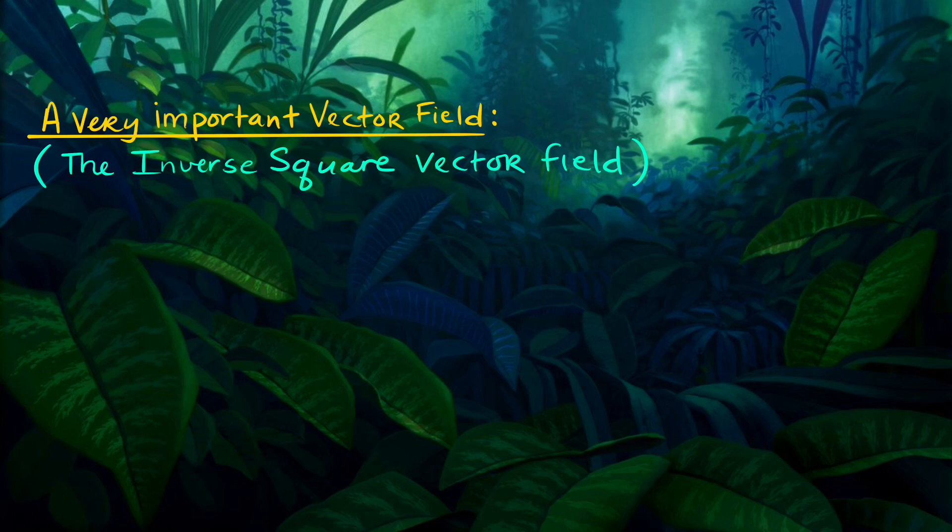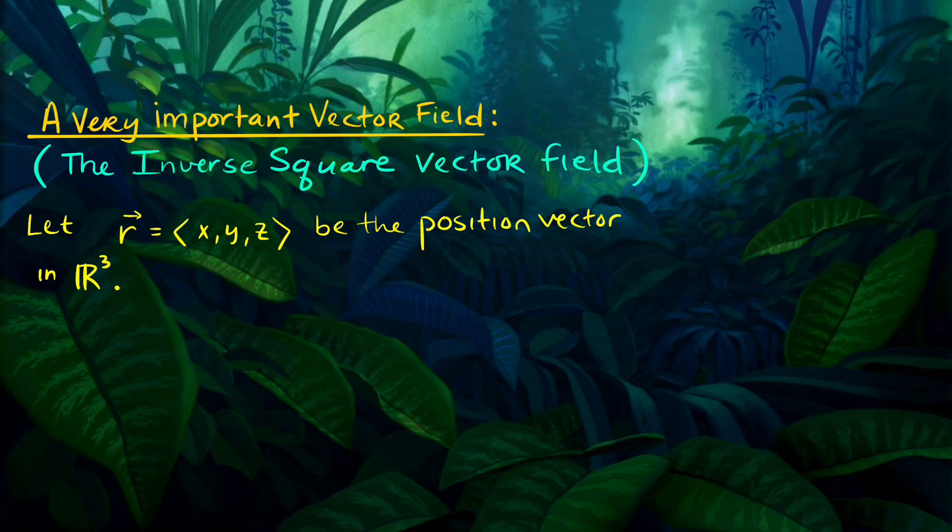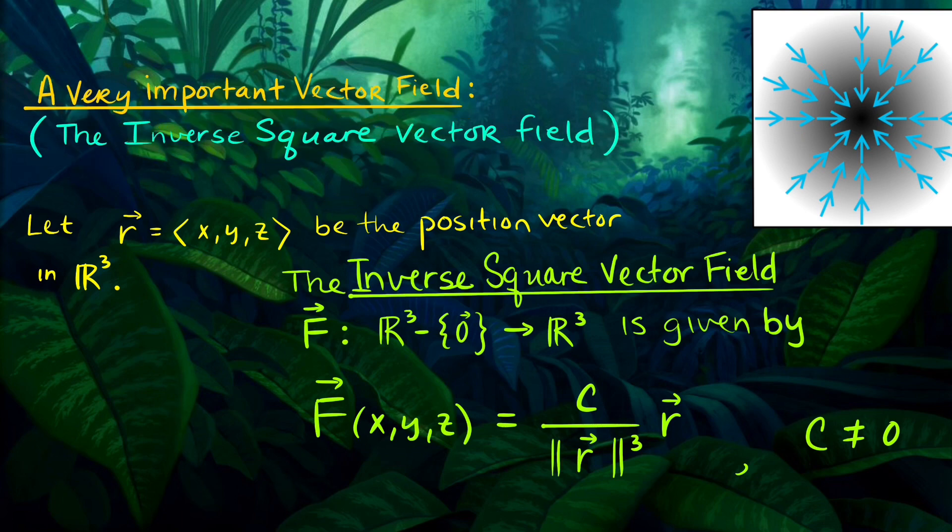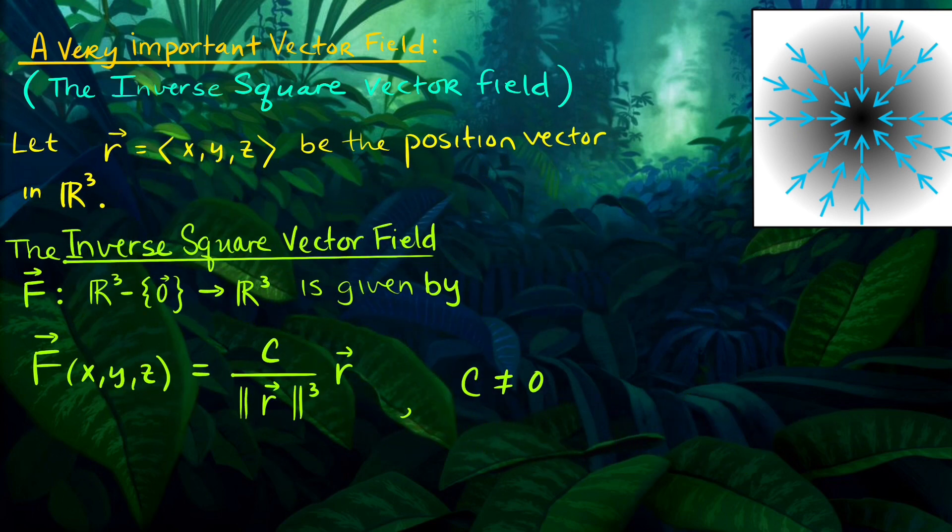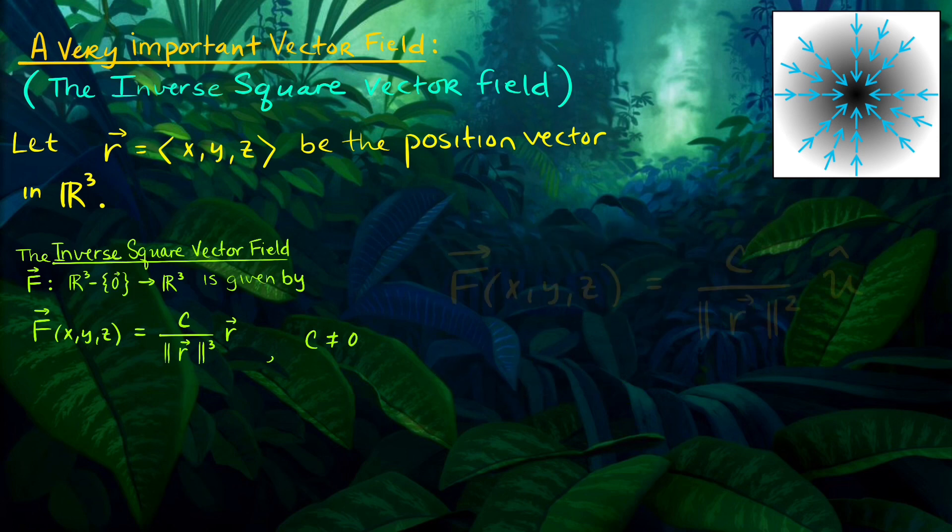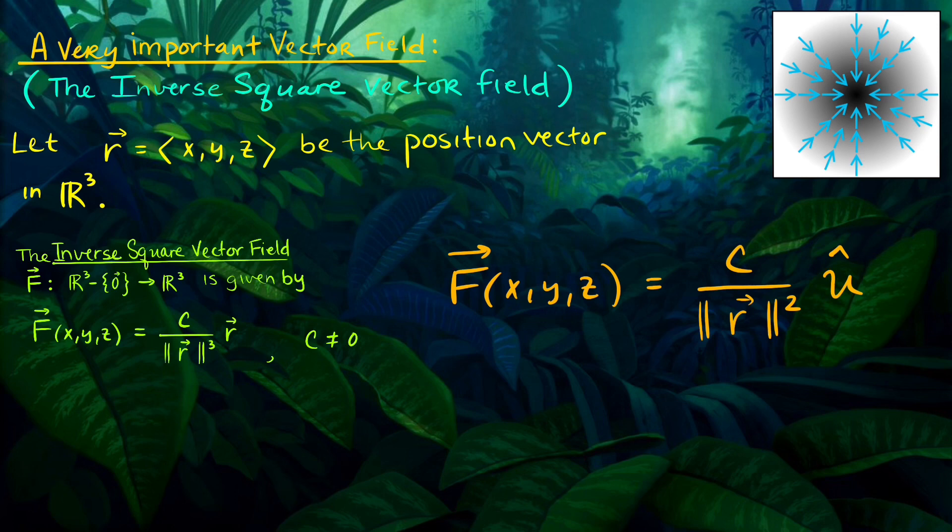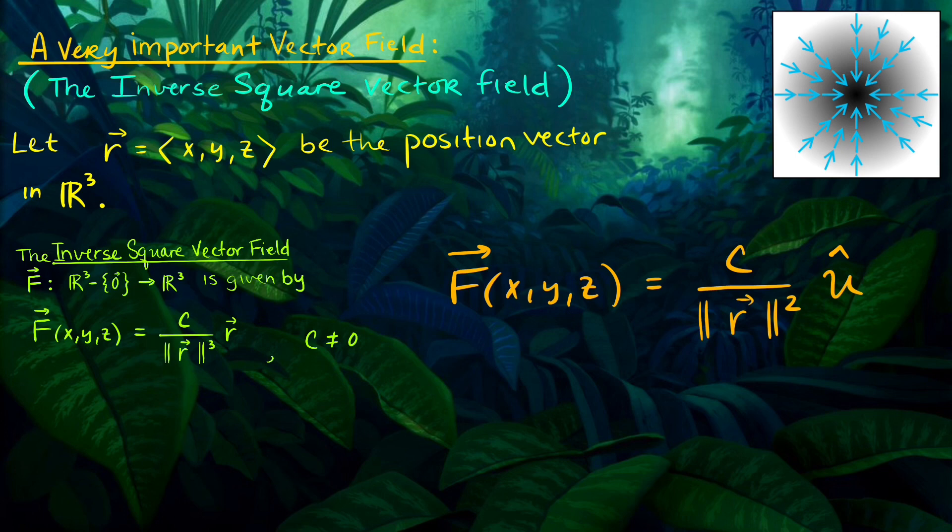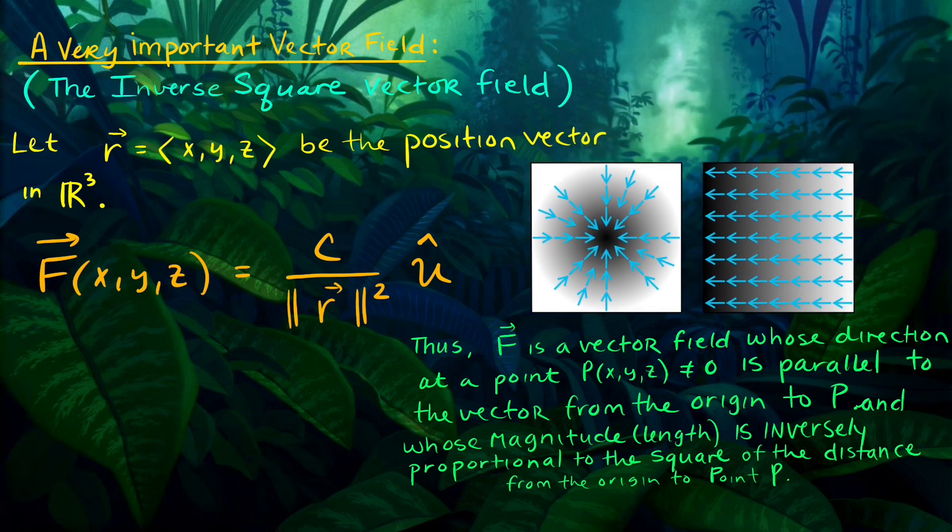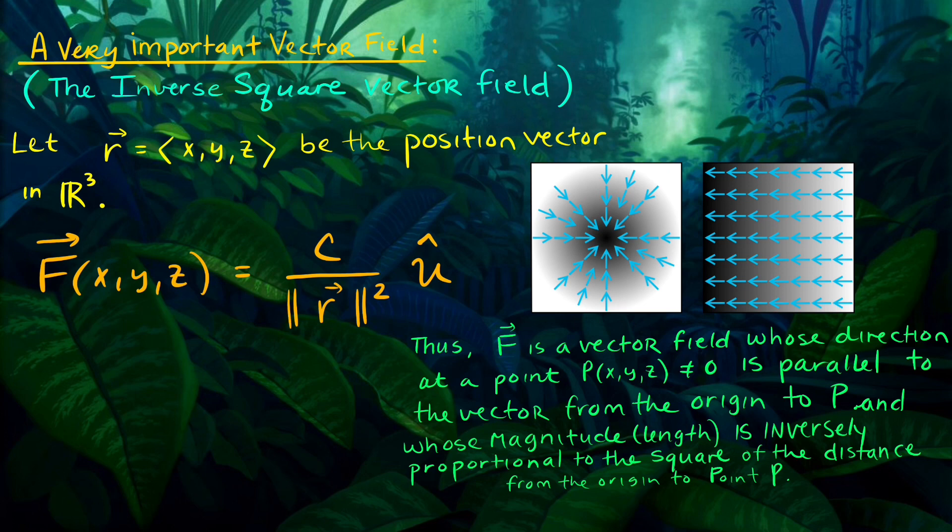A very important vector field to study is the one of an attractive or repulsive force field, an inverse square vector field. Given by a position vector r in R^3, we can define this force field as a constant divided by the magnitude of that position vector cubed in the direction of that radial vector, or the unit radial vector u-hat. Since F is parallel to the radial vector r, its strength is inversely proportional to the distance of r.